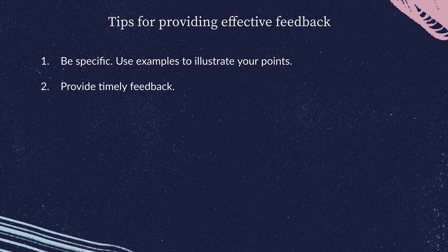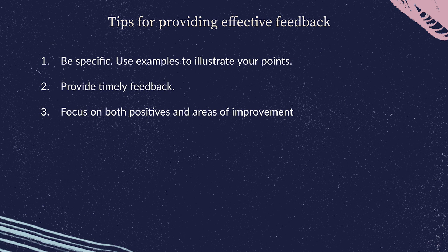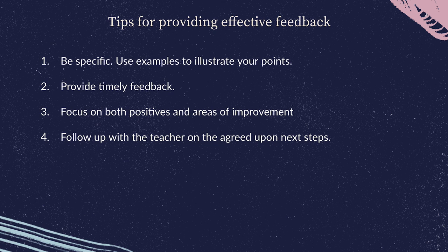Three: provide feedback in a constructive manner — avoid attacking or blaming the person, and instead focus on what they can do differently in the future. Most of the time we tend to share what can be improved, however always start your feedback session by sharing what the teacher did well. Finally, make sure that you give one to two specific and actionable next steps to the teacher, and ensure that you're following up with the teacher on all of those next steps. Now that you've learned how to observe a class and provide feedback, we recommend that you create a schedule for your school visit and start playing the role of a coach to your teachers.